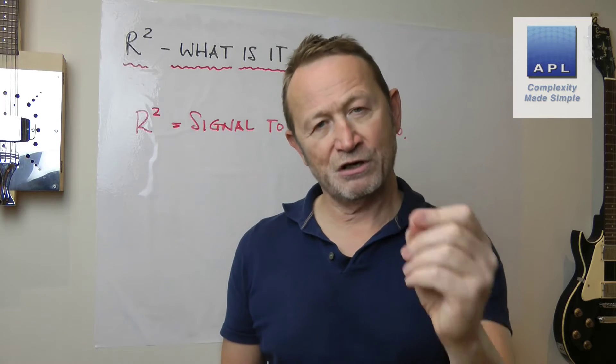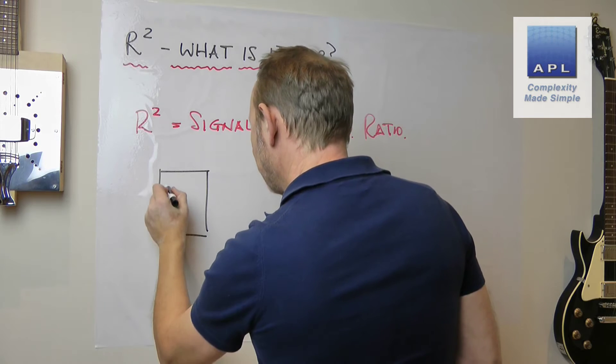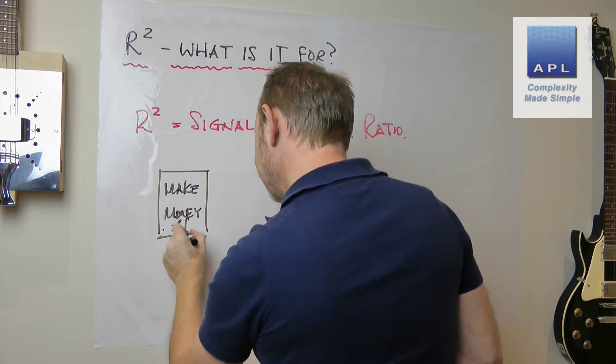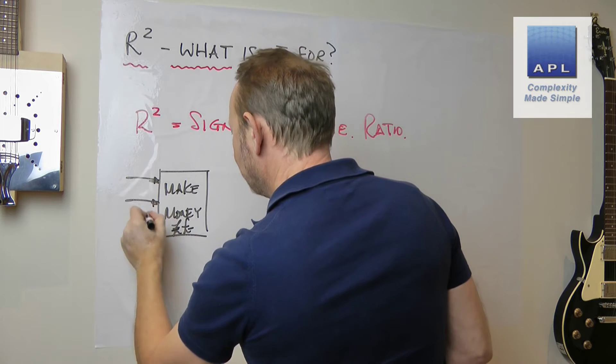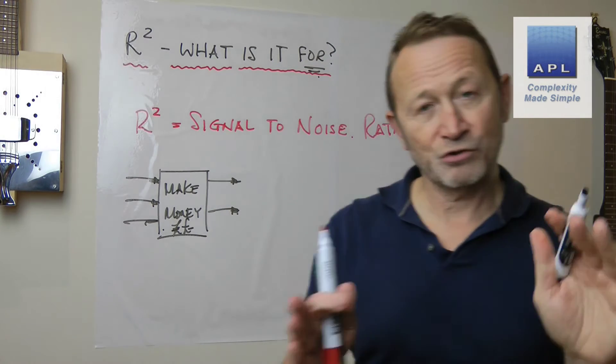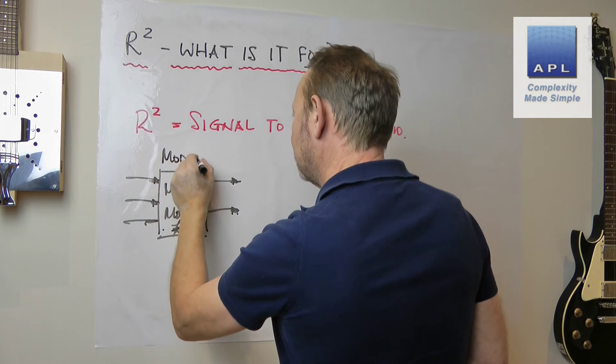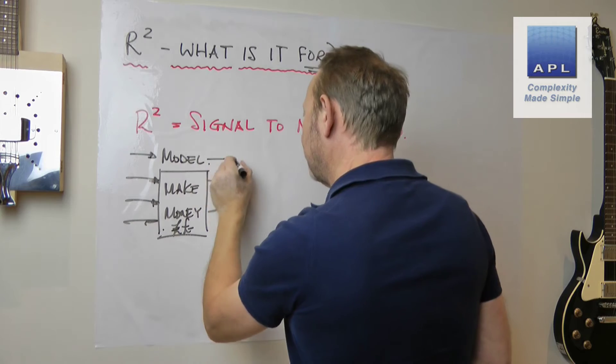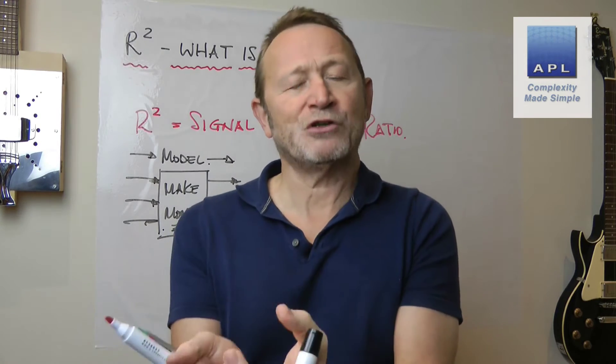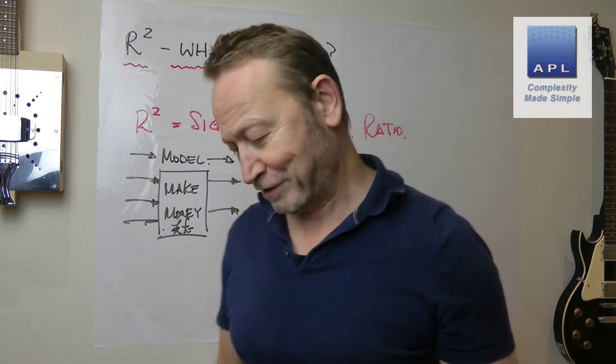When what you are trying to do is understand your process, so typically you've got your process. Here's what all your processes look like - you've got inputs, and what you're trying to do usually when you've got R-squared is you are trying to model and you're trying to understand what effect the input has on the output. And if you get a good model, maybe you can use that to make more money, get rid of some defects, whatever it happens to be.